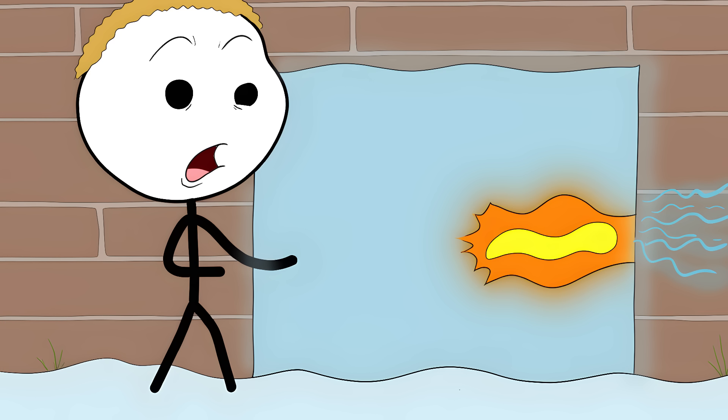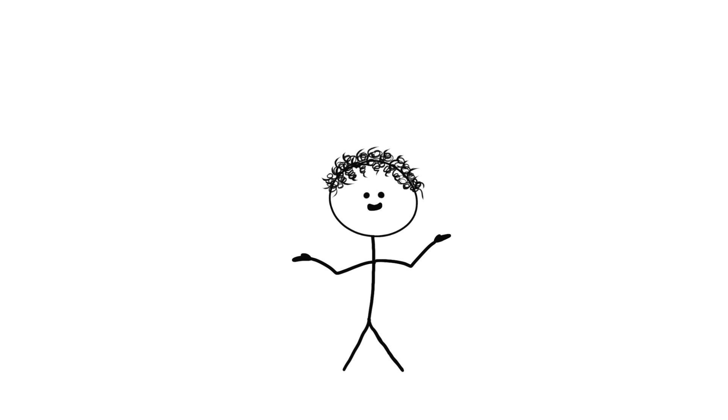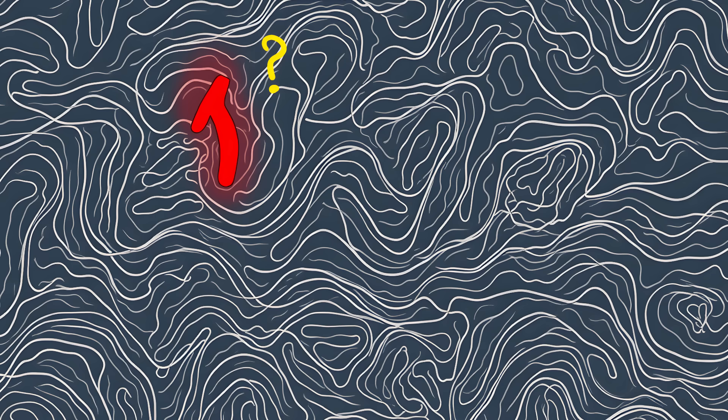Scientists proved this by placing a chocolate bunny on a piece of aerogel and blasting the bottom with a flame. The chocolate doesn't even melt. Heat gets lost in the microscopic maze and can't find its way through.